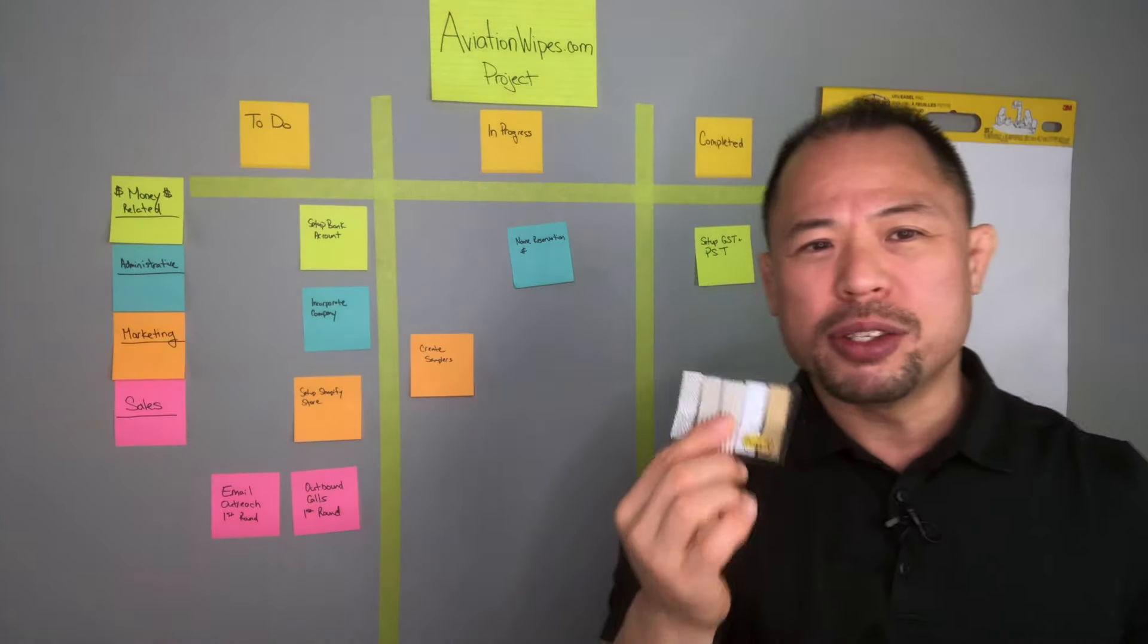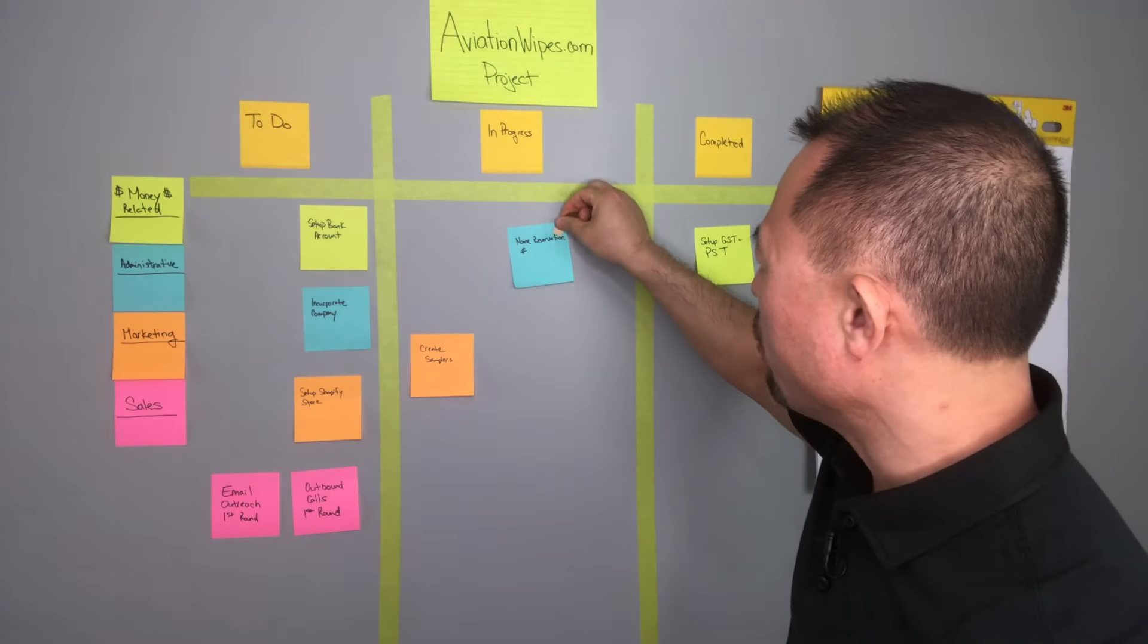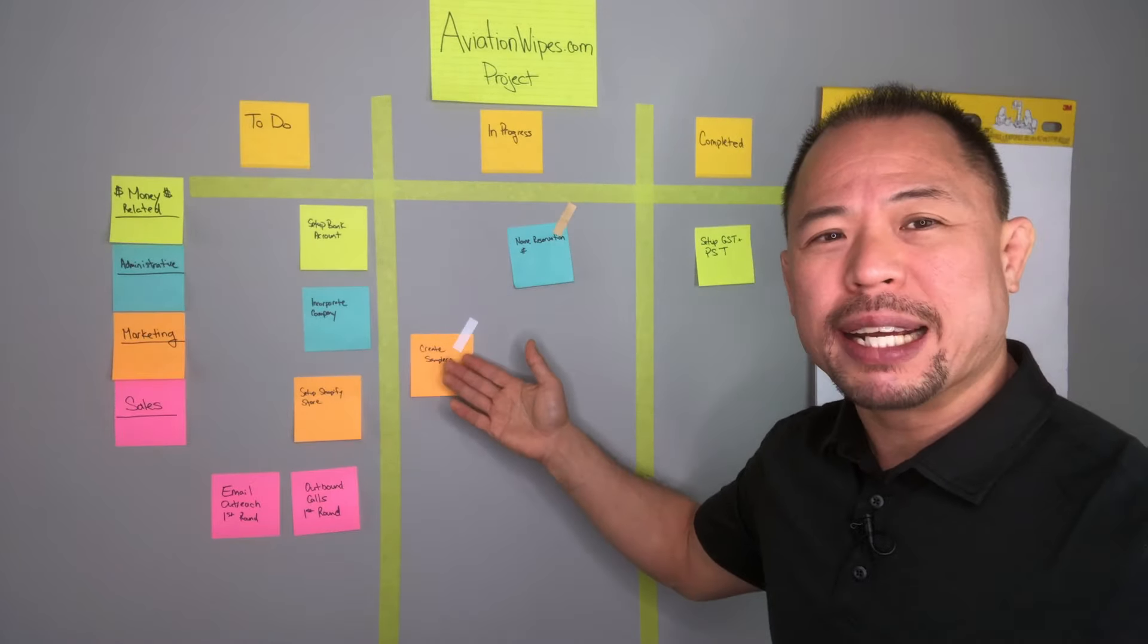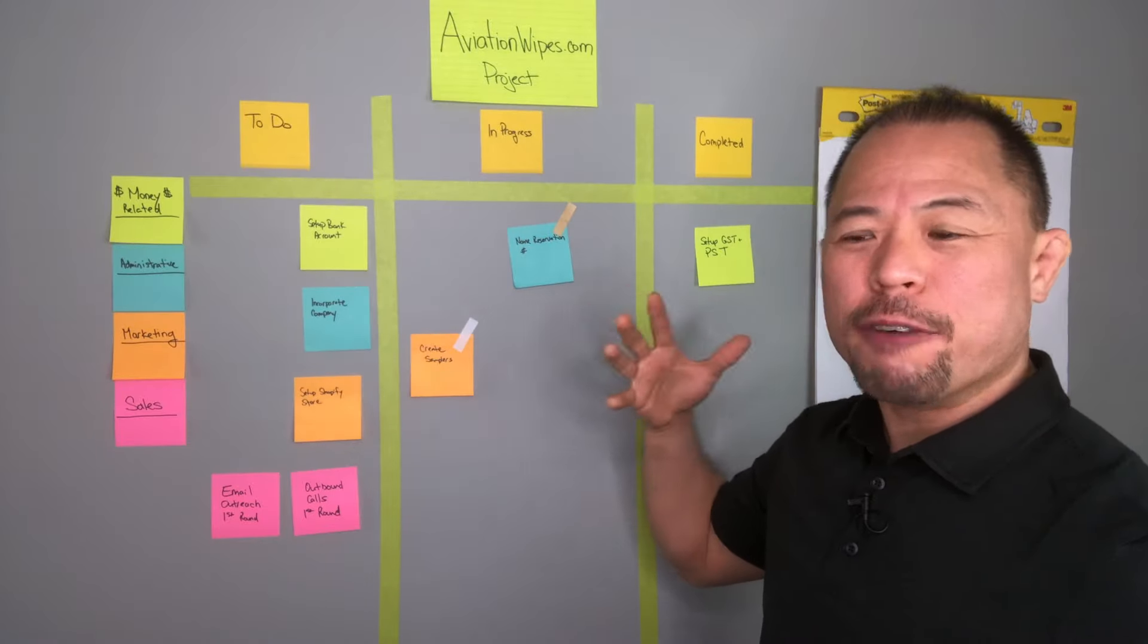Another thing I like to do is use post-it flags to denote anything that requires a lot of attention, or I'll put a flag next to something where I require a little bit more help. So this is a very easy way of managing a project.